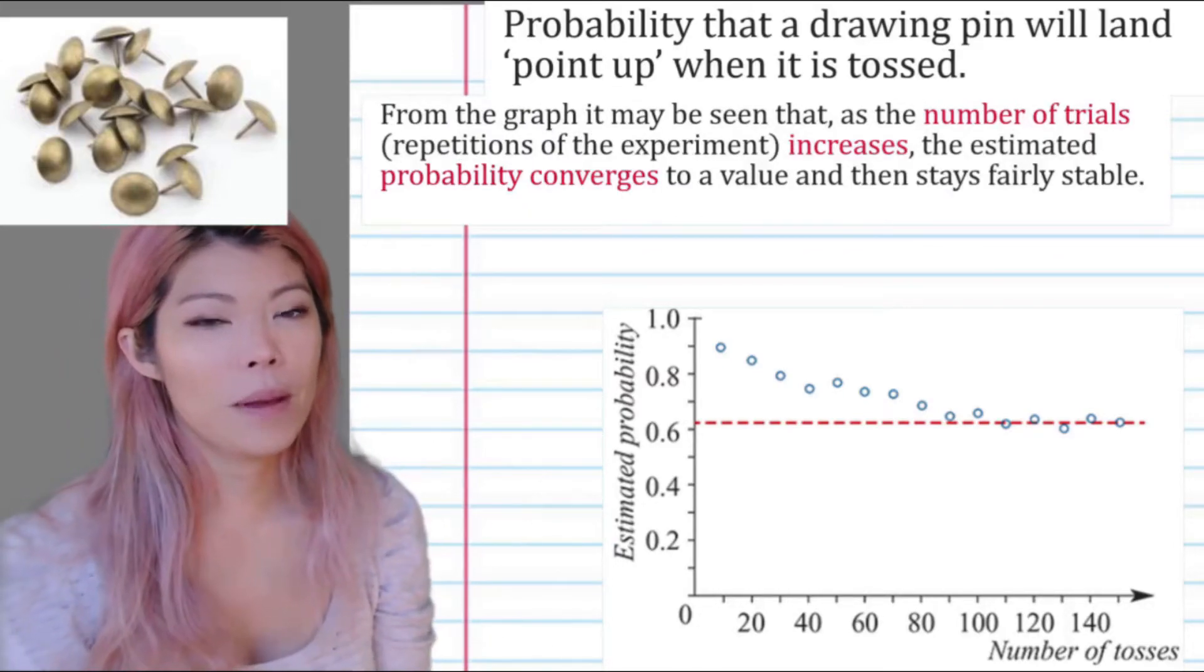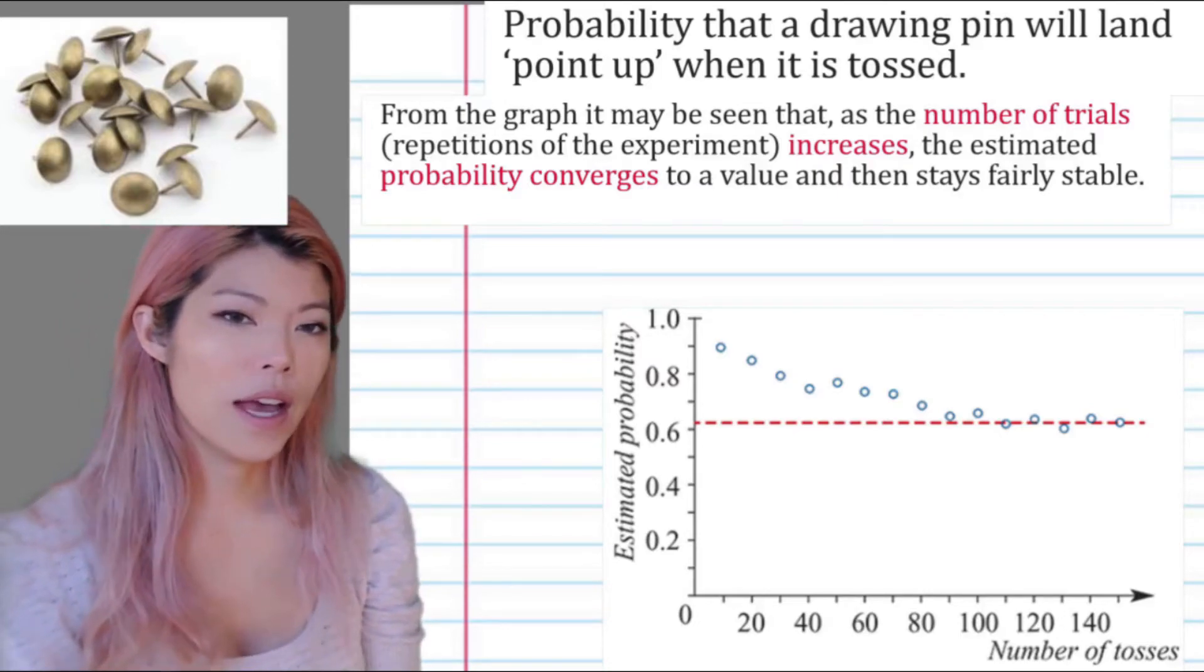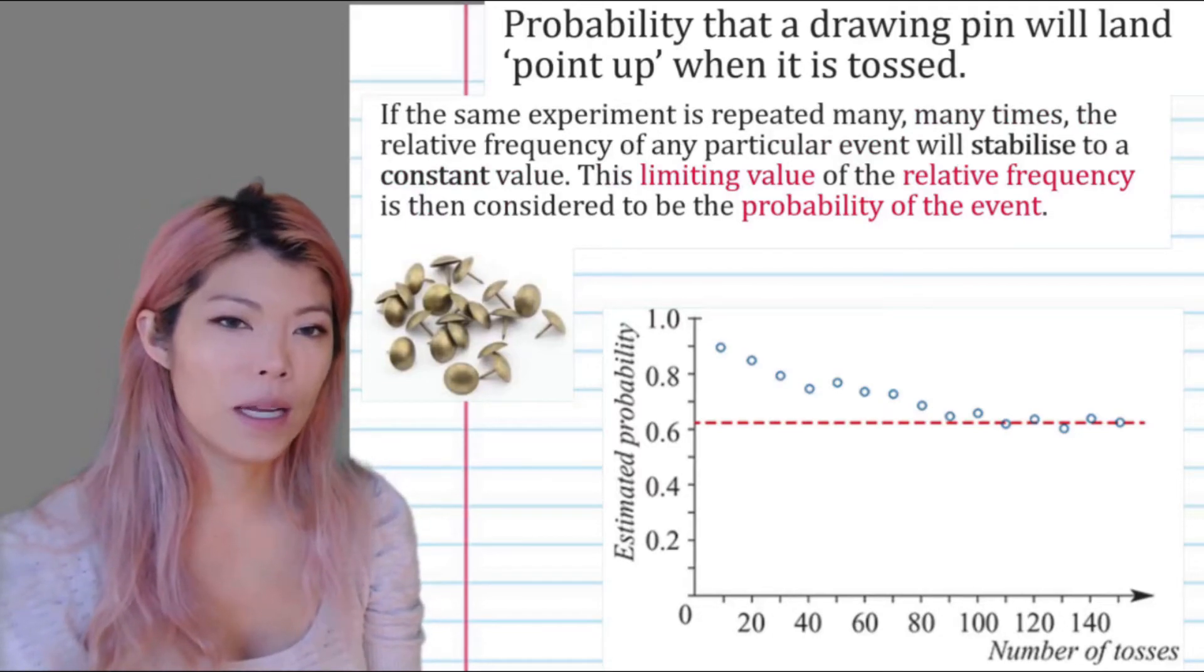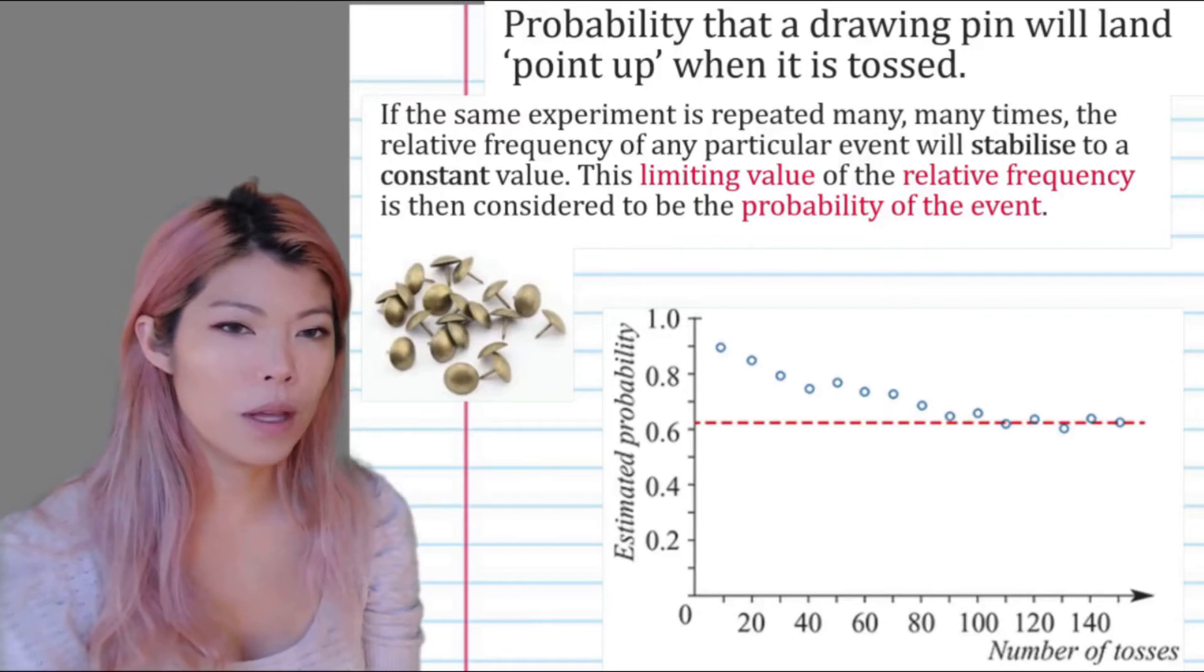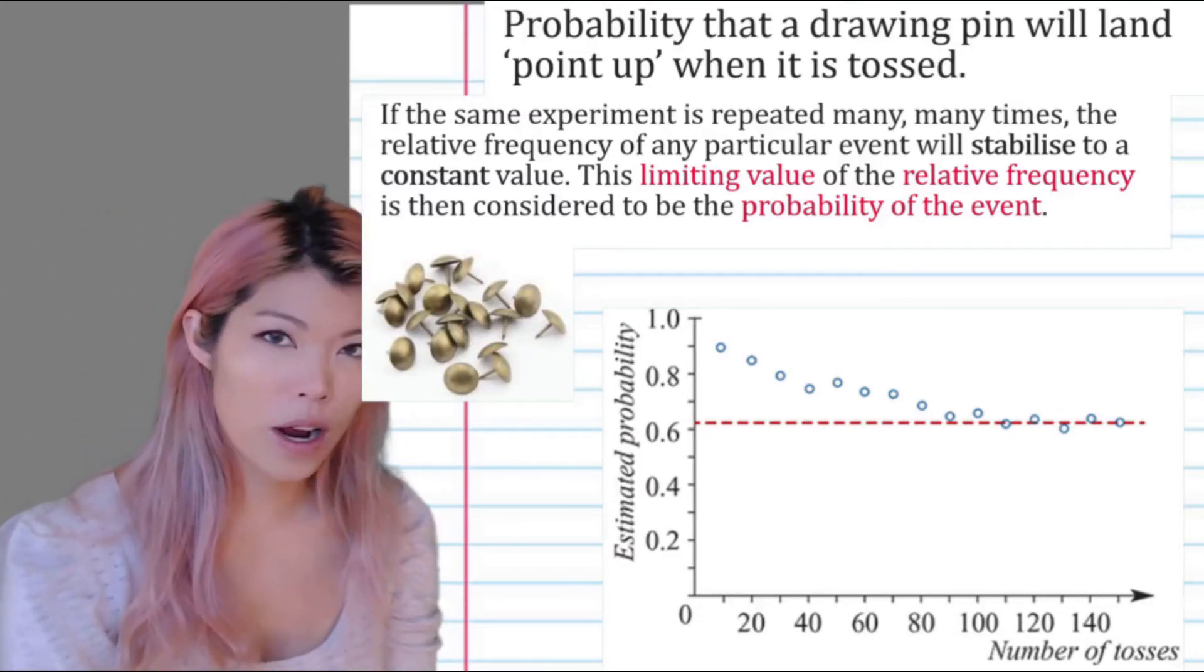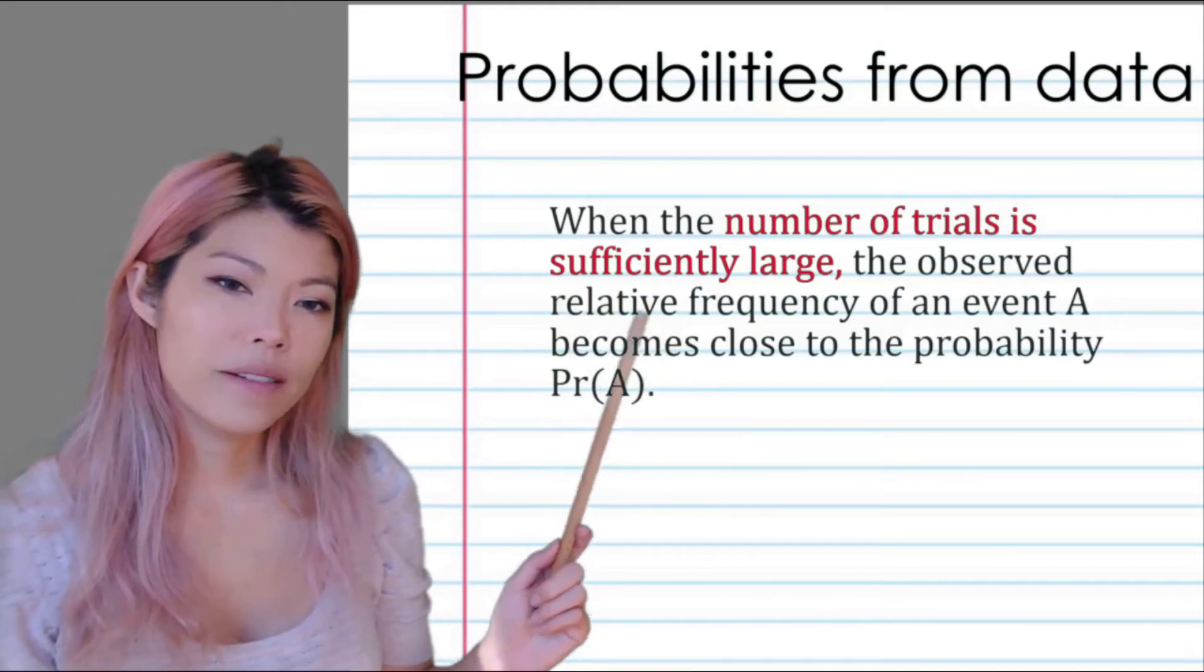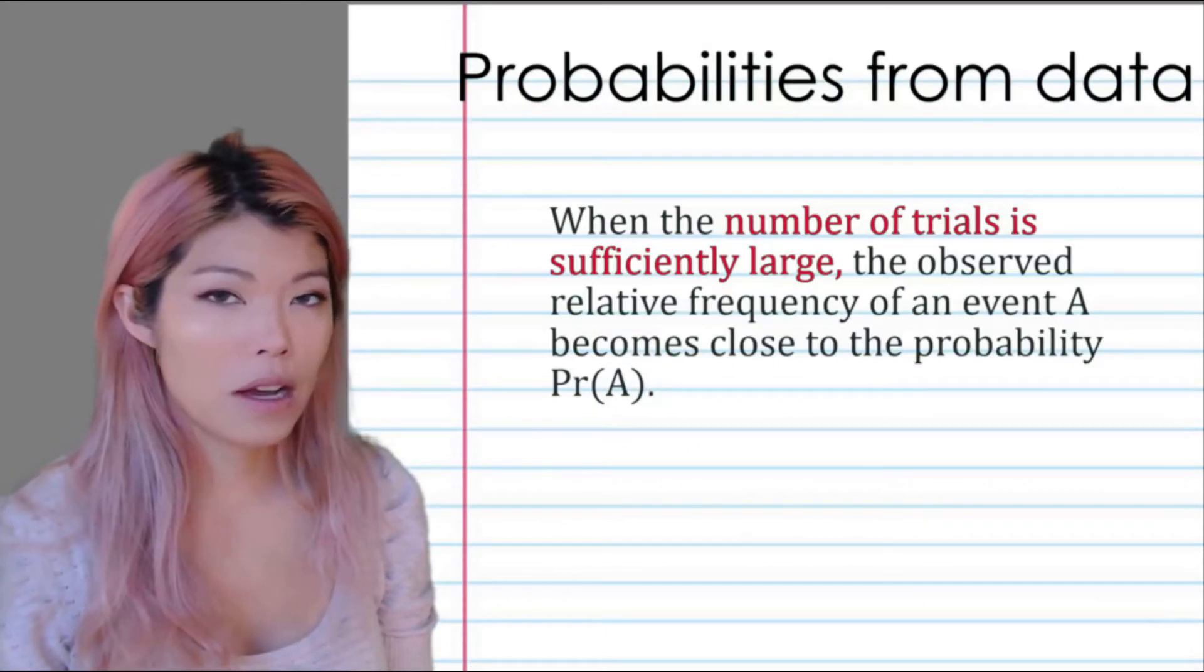To summarize from the graph, as the number of trial repetitions of the experiment increases, the estimated probability converges to a value and then stays fairly stable. If the same experiment is repeated many times, the relative frequency of any particular event will stabilize to a constant value. This limiting value of the relative frequency is then considered to be the probability of the event. This second method of predicting probability is pretty good, as long as you have many trials. Relative frequency becomes the probability when the trials is many. When the number of trials is sufficiently large, the observed relative frequency of an event A becomes close to the actual probability of A.